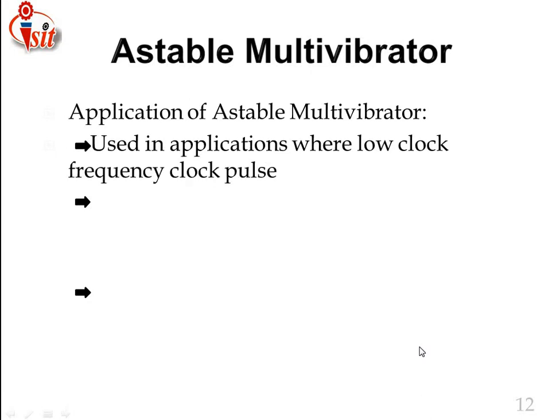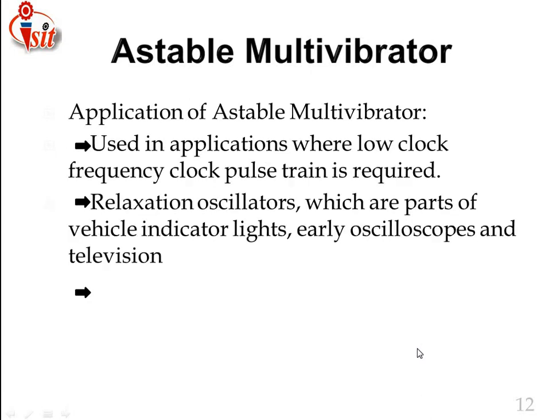Applications of the astable multivibrator: it is used in applications where low clock frequency persistence is required. It is used in relaxation oscillators — which are non-sinusoidal oscillators and thus multivibrators — used in vehicle indicator lights, early oscilloscopes, and television receivers. Timing signals are also generated using the astable multivibrator.